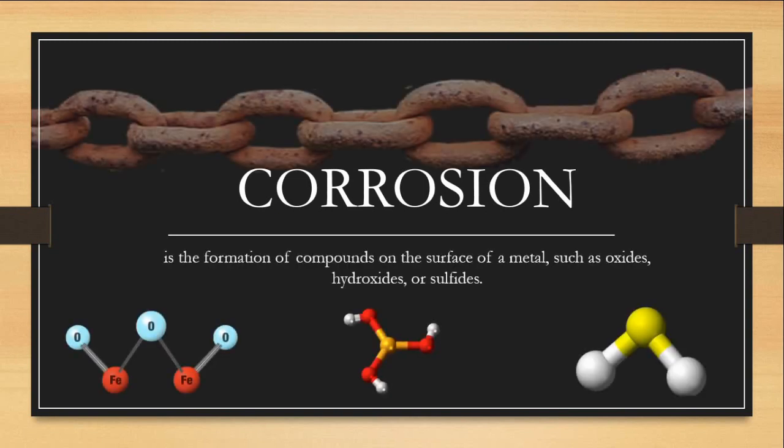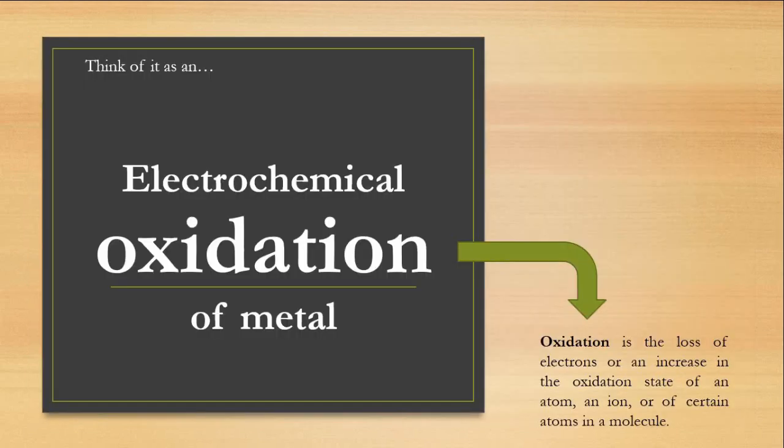Corrosion is the formation of compounds on the surface of a metal such as oxides, hydroxides, or sulfides. Think of it as an electrochemical oxidation of metal in reaction with an oxidant such as oxygen or sulfates.